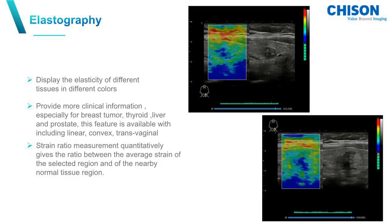Elastography displays the elasticity of different tissues in different colors. It can provide more clinical information, especially for breast tumor, thyroid, liver, and prostate. This feature is available with linear, convex, and transvaginal probes.